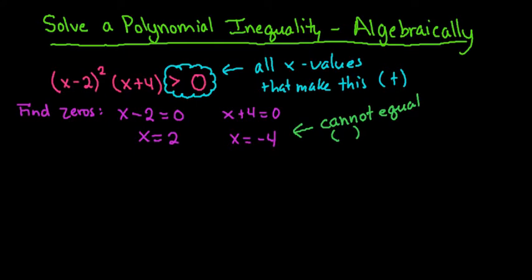In order to solve this, we're going to use the zeros and figure out what's going on in between those values, whether it's positive or whether it's negative. We know that at x equals negative 4, we have a point that it either crosses or touches the axis, and then at x equals positive 2, we also have a point.